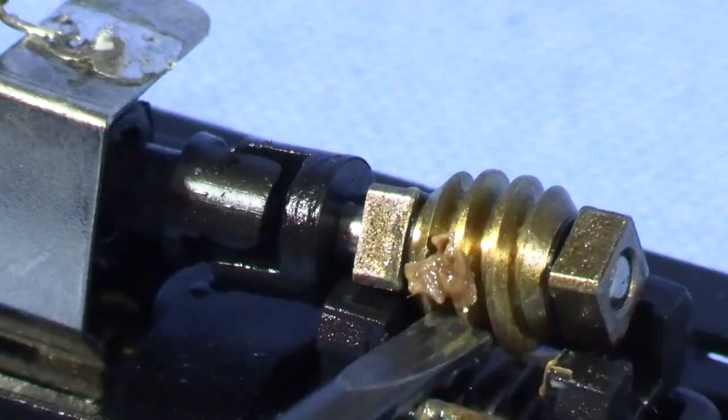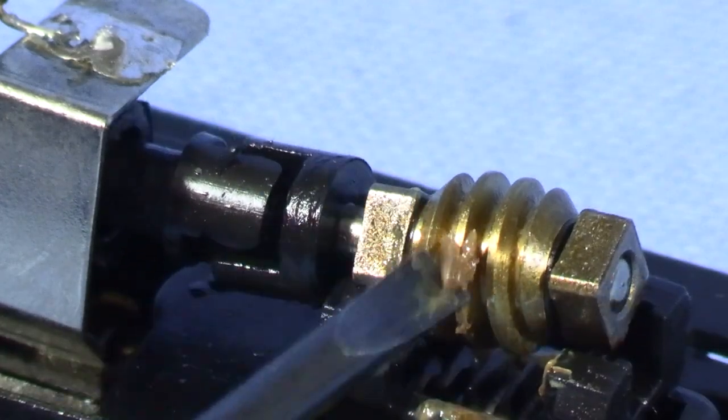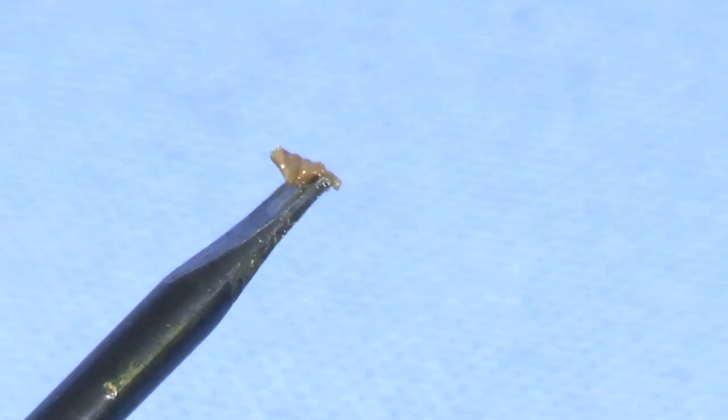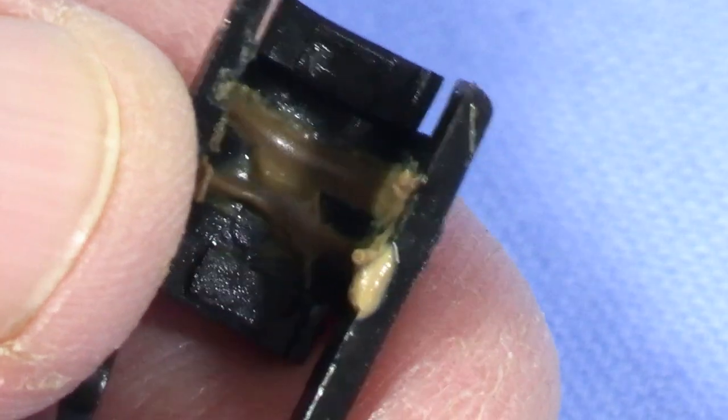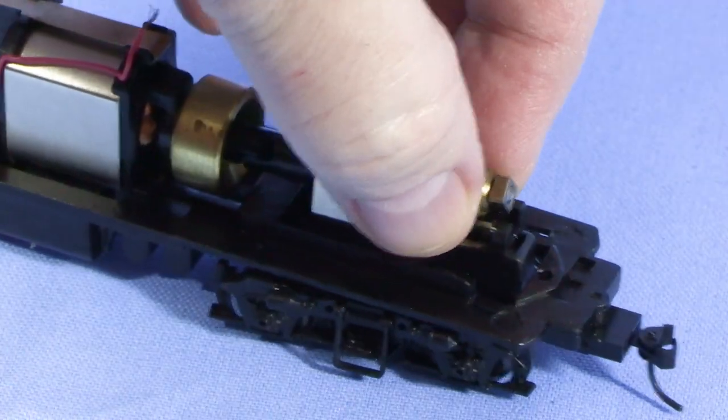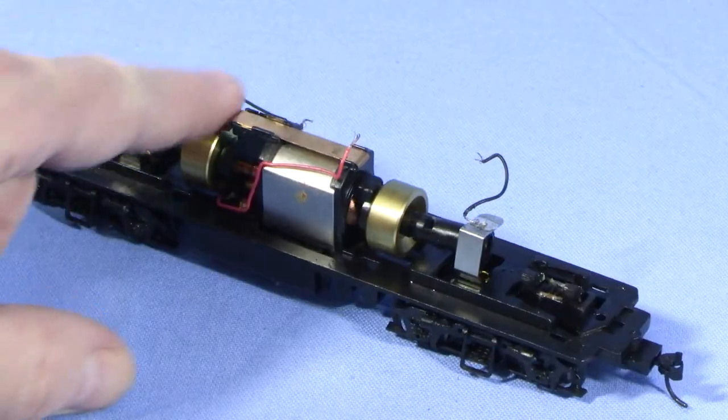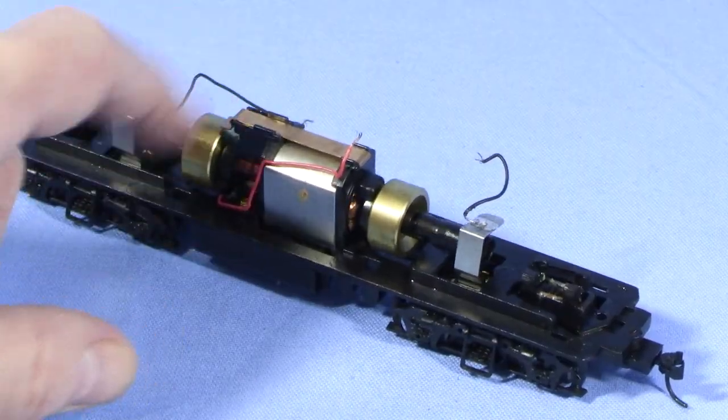Now I can remove the trucks. I'll use a small flat-bladed screwdriver to pry off the worm gear covers. Before I continue, look at the congealed lubricant on the gear. This has the consistency of putty. There's more congealed lubricant inside the worm gear covers. I'll remove the worm gears and universals. Now the motor spins easily. The problem is definitely in the gears.